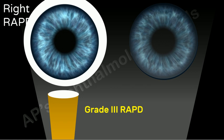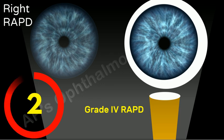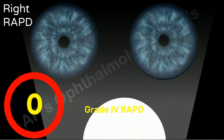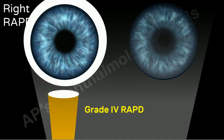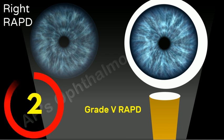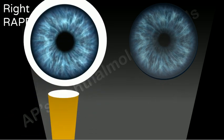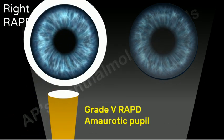If the initial response is a constriction or a stall, then the RAPD remains grade 3. If the initial response is immediate dilatation followed by a secondary constriction, the RAPD is a grade 4. If the initial response is immediate dilatation with no secondary constriction, or no direct response to direct light, the RAPD is a grade 5.